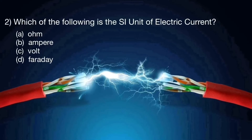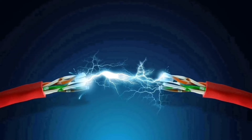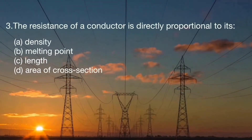Question number two: which of the following is the SI unit of electric current? A: ohm, B: ampere, C: volt, D: Faraday. Question number three: the resistance of a conductor is directly proportional to — A: its density, B: melting point, C: length, D: area of cross-section.